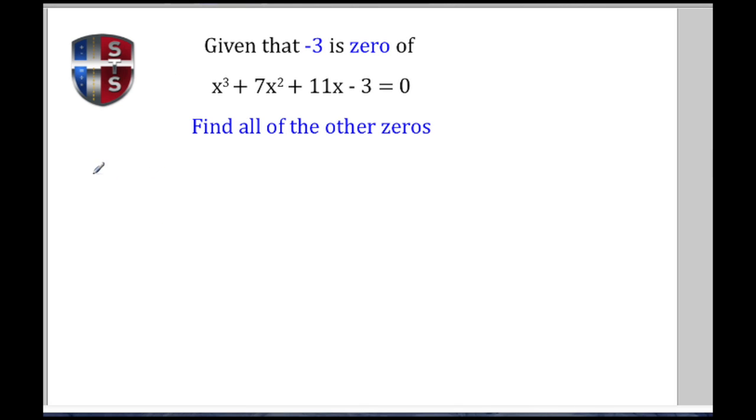Let's begin by using synthetic division. They've given us one of the zeros which is -3, and now I need to list the coefficients for each one of these terms in my polynomial. For the x³ its coefficient is 1, for the x² I'm using 7, for the 11x it's 11, and my constant here is -3.